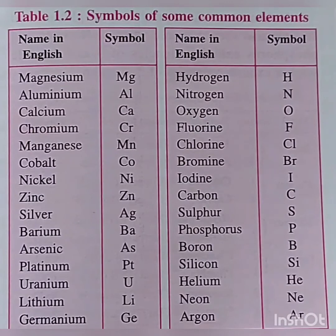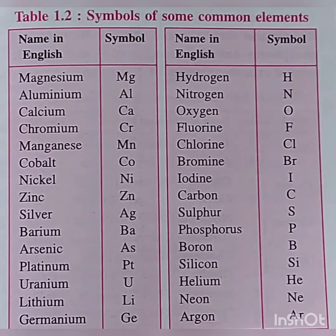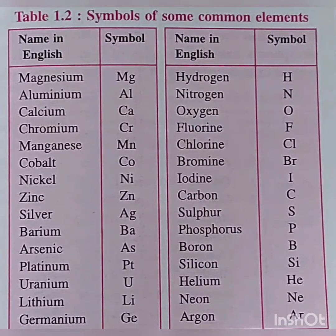The symbol is written in capital. For example, Sulphur is denoted by S, and Hydrogen is denoted by H in capitals. However, when the first letter of one or more elements is the same, the elements are denoted by two letters — the first letter is written in capital while the second one is written in small (second order). For example, Mg: M is capital, g is small. Al: A is capital, l is small.